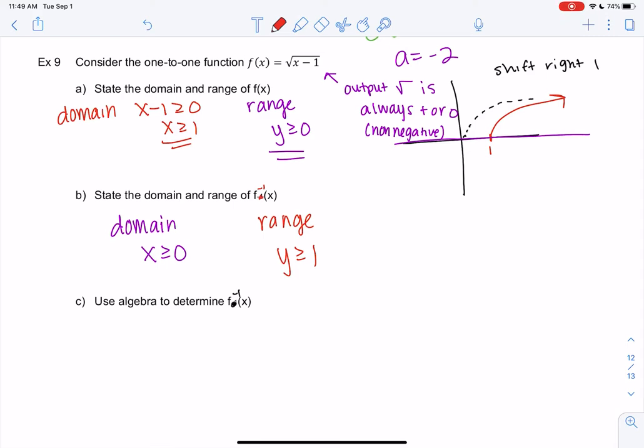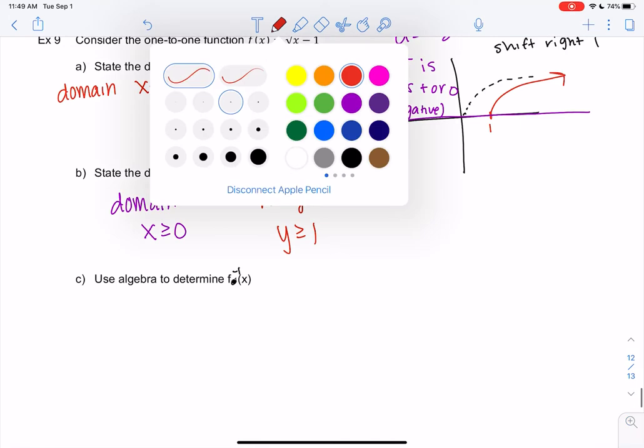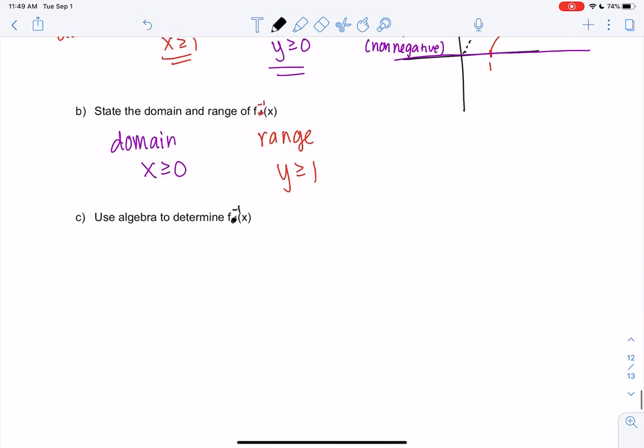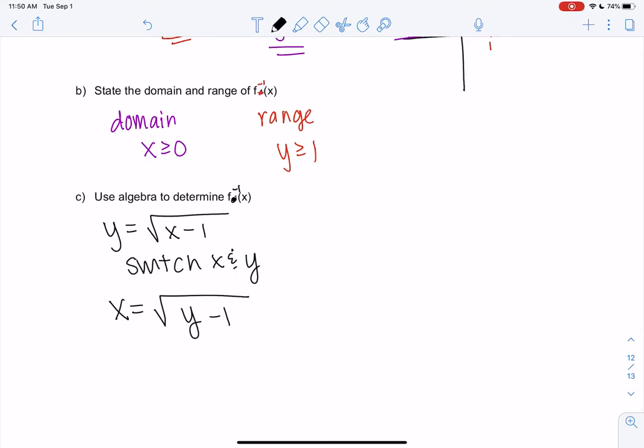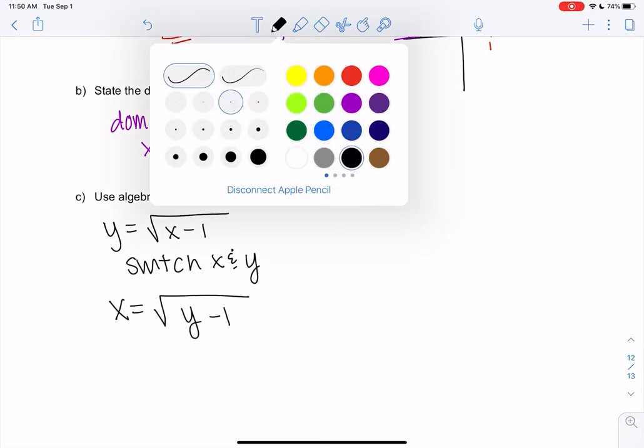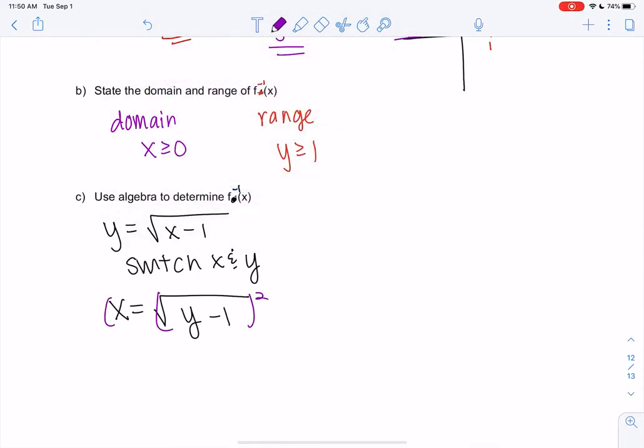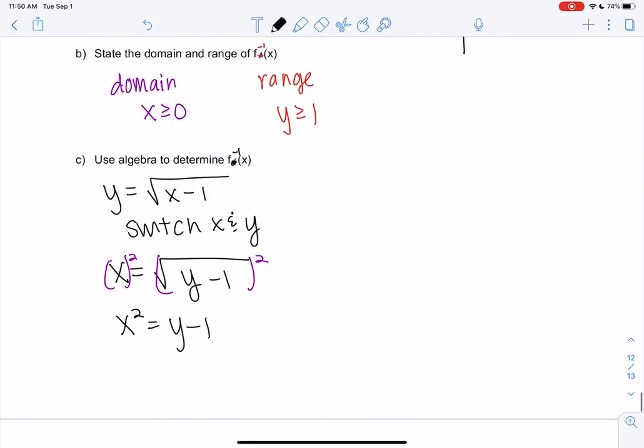So let's actually find the inverse to confirm all this is true. So our original function is y equals square root x minus one. We're going to go ahead and switch them to make an inverse. So x equals square root y minus one. And we'll solve for y. So I recommend squaring both sides to get rid of the square root. So x squared equals y minus one. And then we just add one.